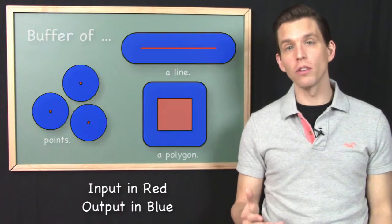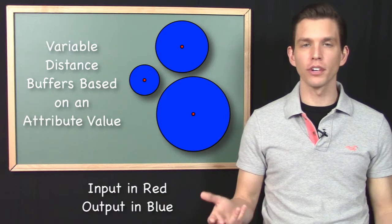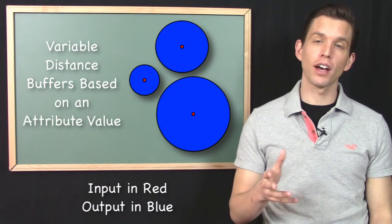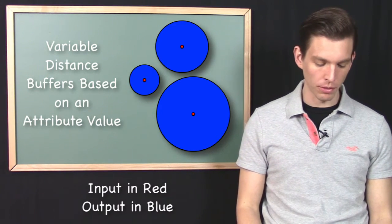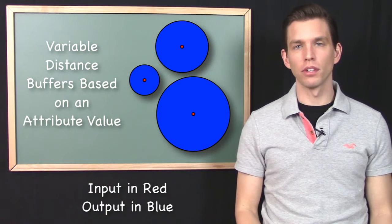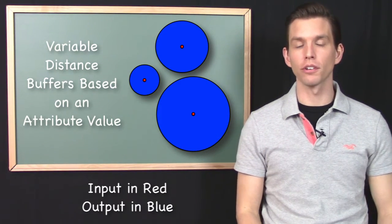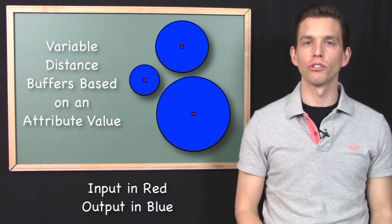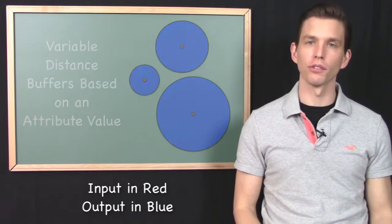We can also create variable distance buffers if we're buffering all of the features in a particular data file, because we can specify this buffer distance based on a value in the attribute table. So they don't all have to have the same distance. If we have the buffer distance stored in the attribute table for each particular feature, we can specify that the buffer tool should use that distance when running all of these buffers.